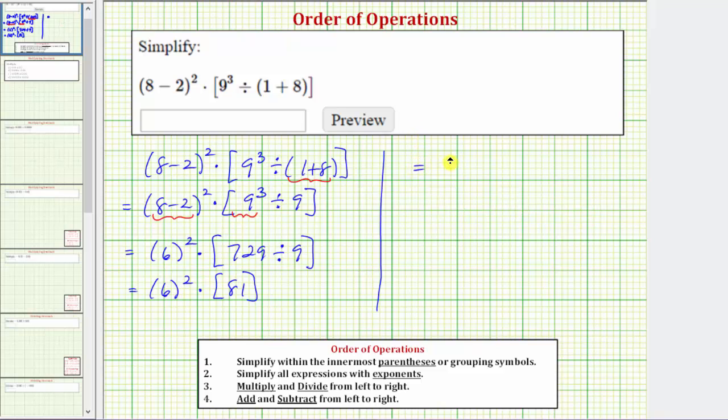Continuing to simplify, again we have six squared times eighty-one. So we have an exponent here and multiplication. We simplify exponents before we multiply. Six squared is equal to six times six, which equals thirty-six. So we have thirty-six times eighty-one.